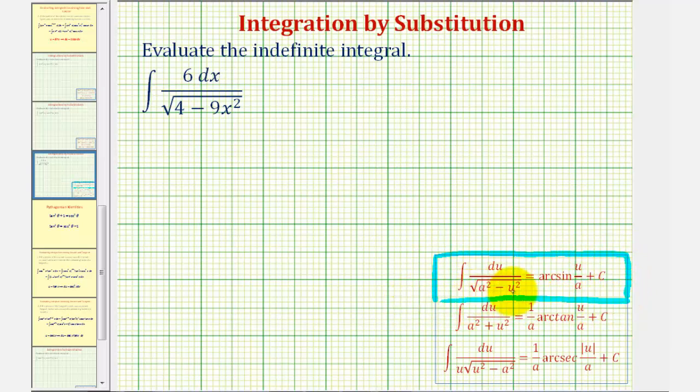Now let's determine a, u, and du. Let's begin by factoring out the 6. We can write this as 6 times the integral of dx divided by the square root.